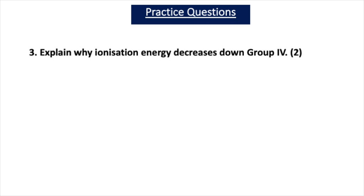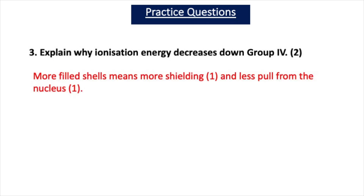Practice question three asks you to explain why ionization energy decreases down group 4. There are more filled shells as you go down group 4, which means more shielding and therefore less pull from the nucleus, so it becomes easier to remove an outer electron.